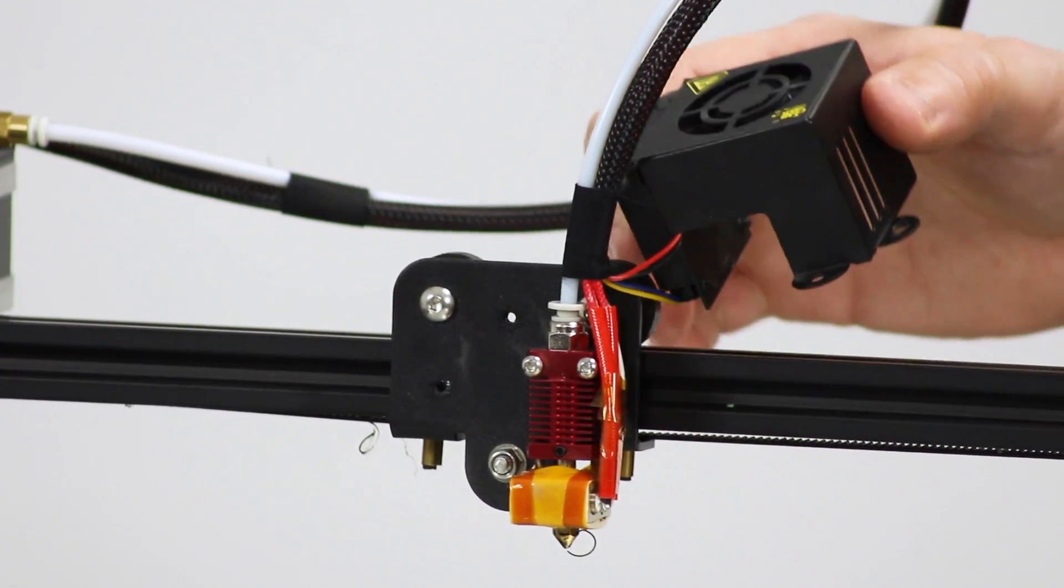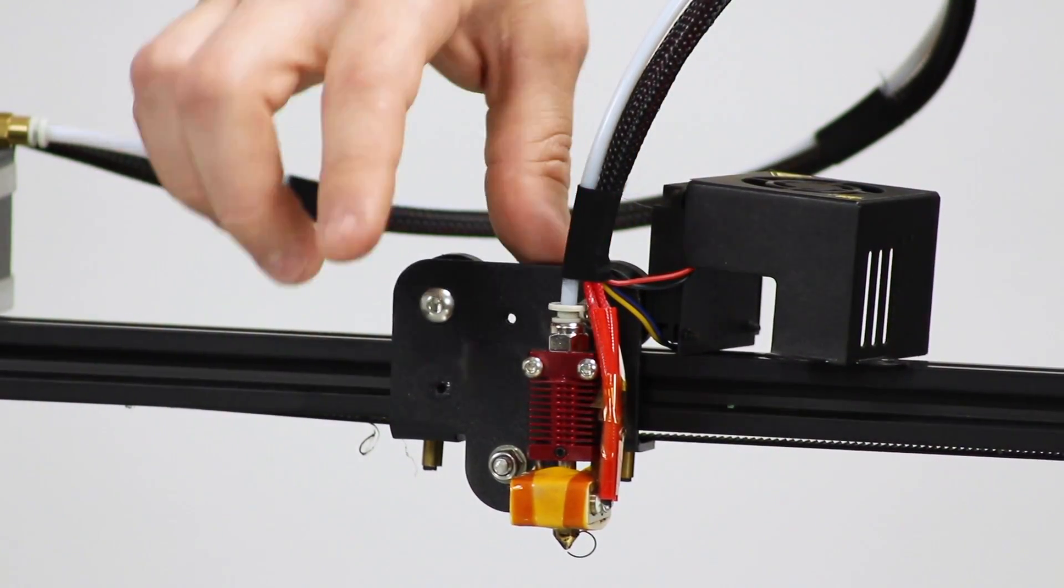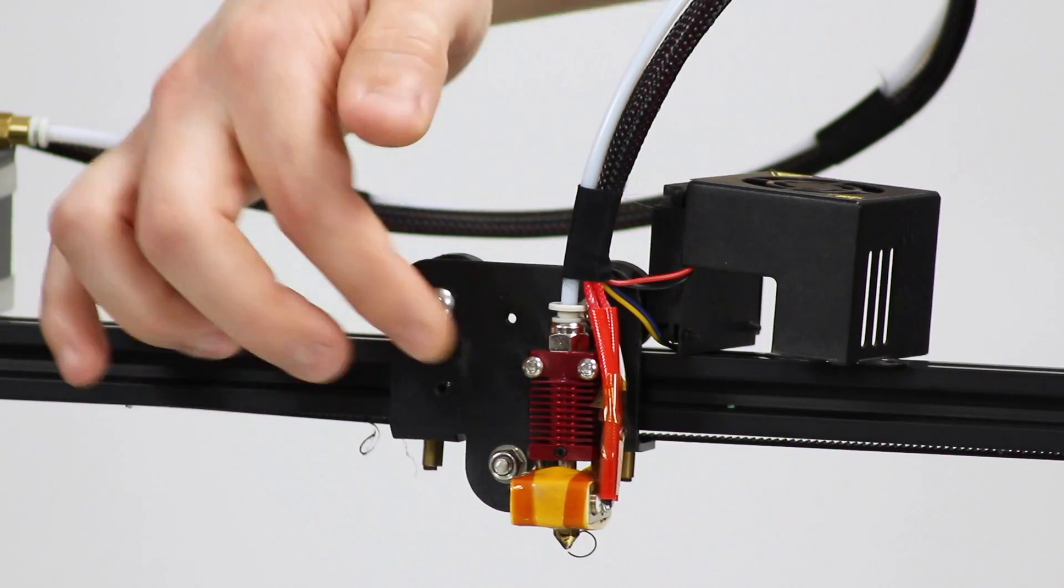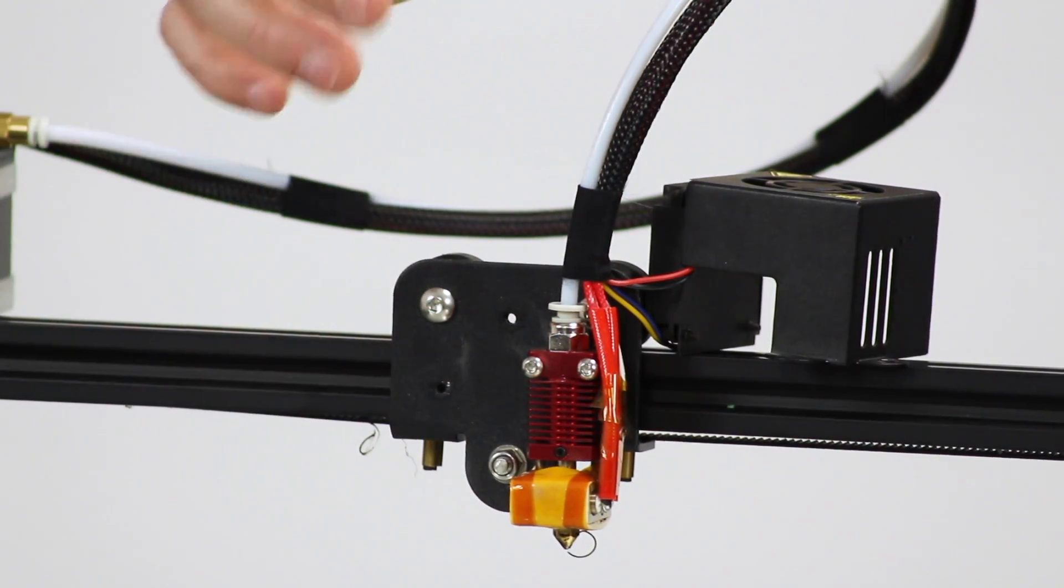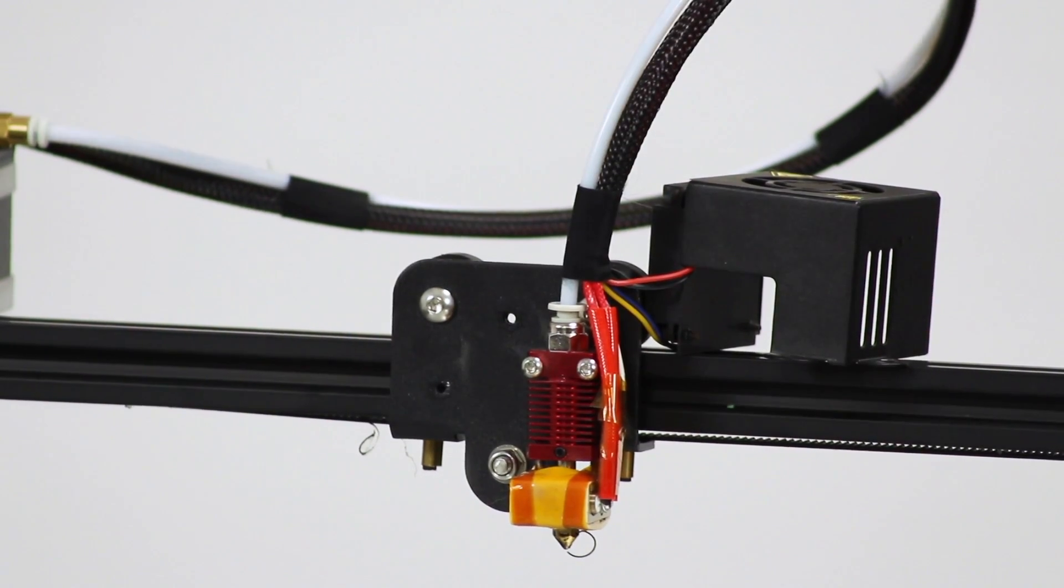So with the fan shroud off and both the cooling fans still attached to that, we have the cold side of the hotend. It's an MK8 hotend assembly. You've got the heater block, the pinch-type thermistor, the heater cartridge, obviously. The nozzle under here.